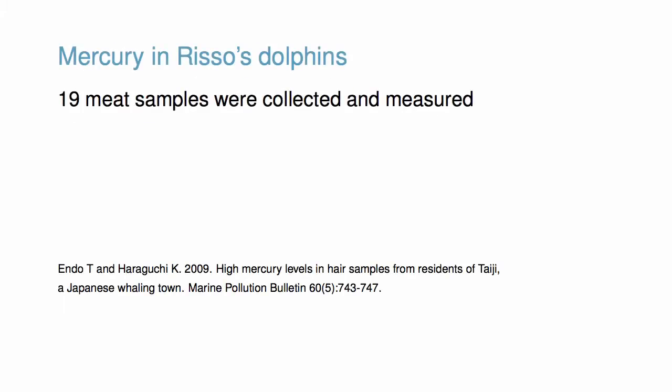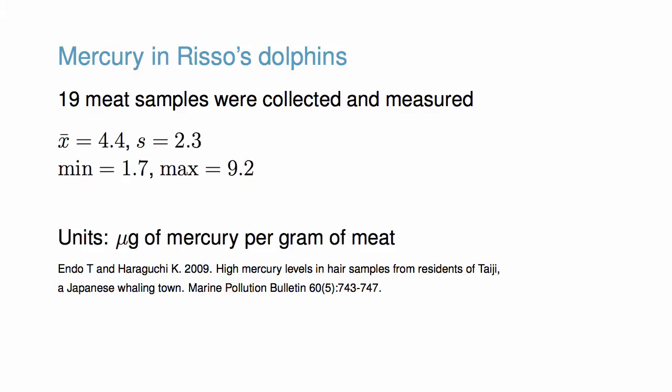The dataset comes from a study where 19 Risso's dolphin meat samples were tested. The average concentration was 4.4 micrograms of mercury per gram of meat. The sample standard deviation was 2.3 and the data ranged from 1.7 to 9.2.